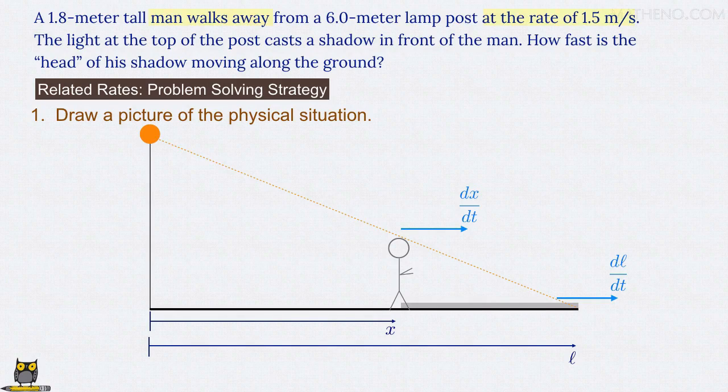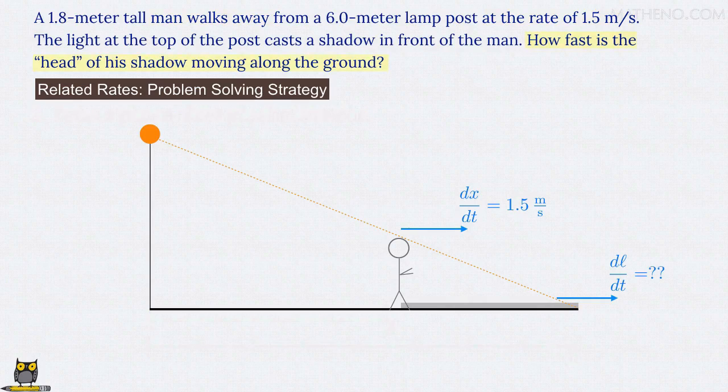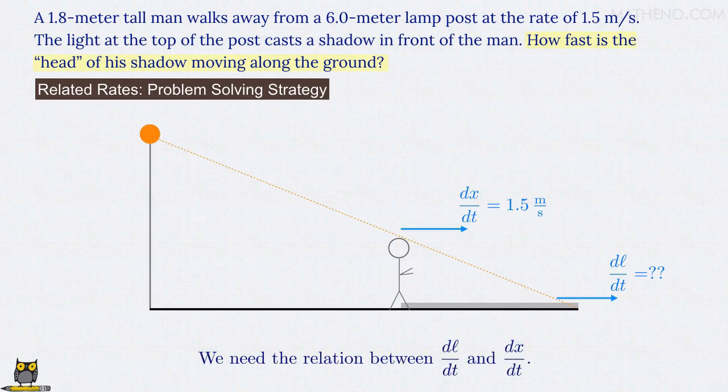Specifically, we're told that the man walks at 1.5 meters per second, which is the value of dx/dt. And we're looking for the corresponding value of dl/dt, the rate at which l changes. We need then to find the relation between dl/dt and dx/dt.